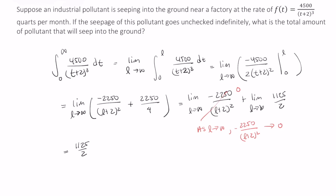In a real-life context, you wouldn't leave it as a fraction—you'd say it's 562.5 quarts. So left unchecked, if this industrial pollutant is seeping into the ground at this rate, we know that about 562.5 quarts of pollutant will seep into the ground near the factory.